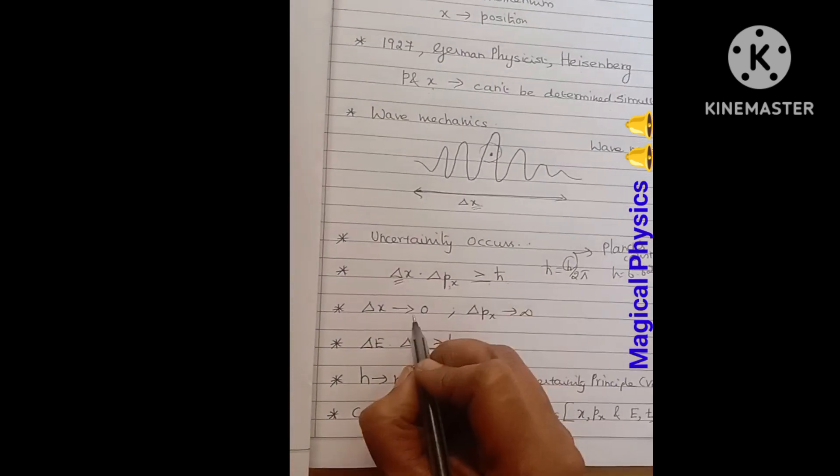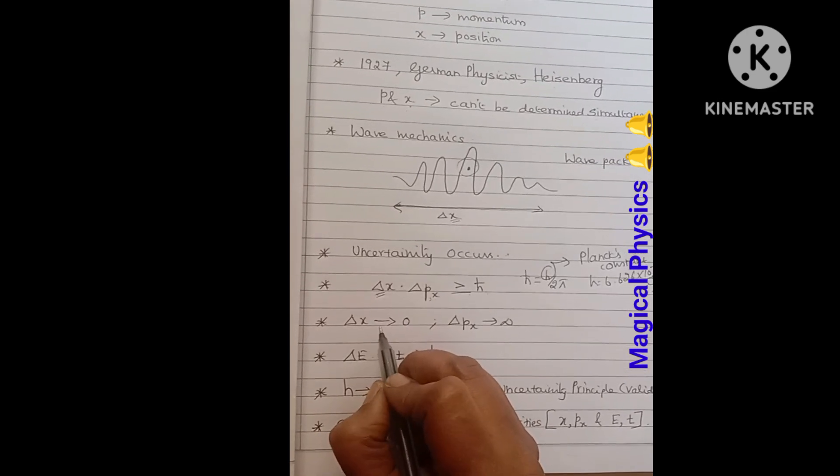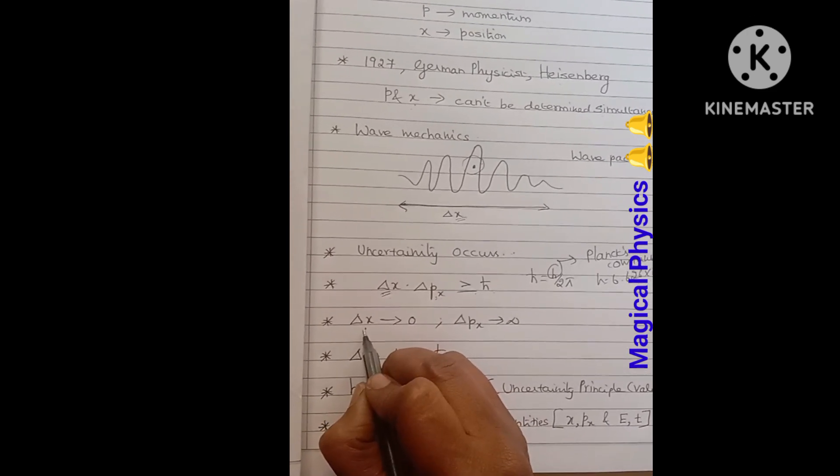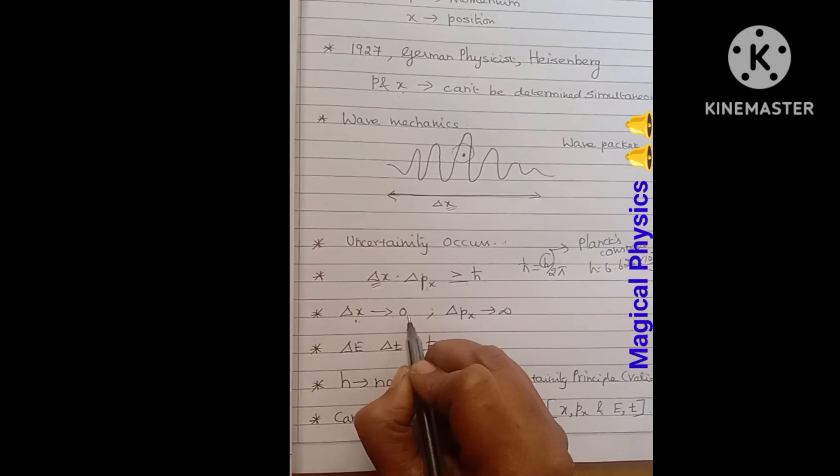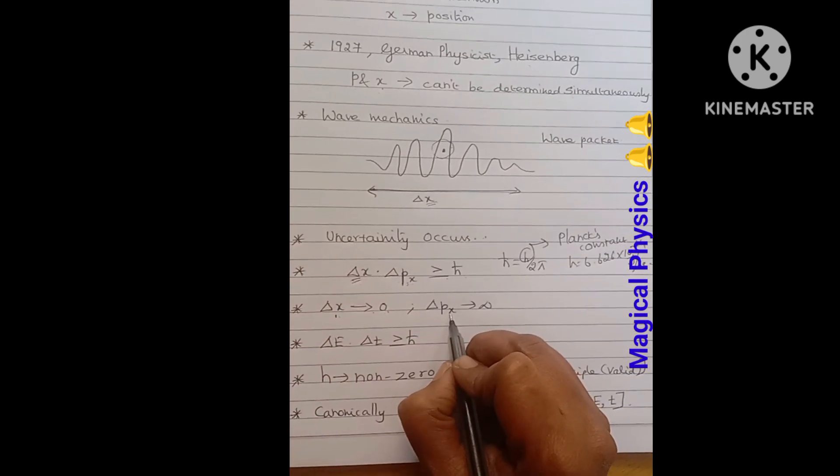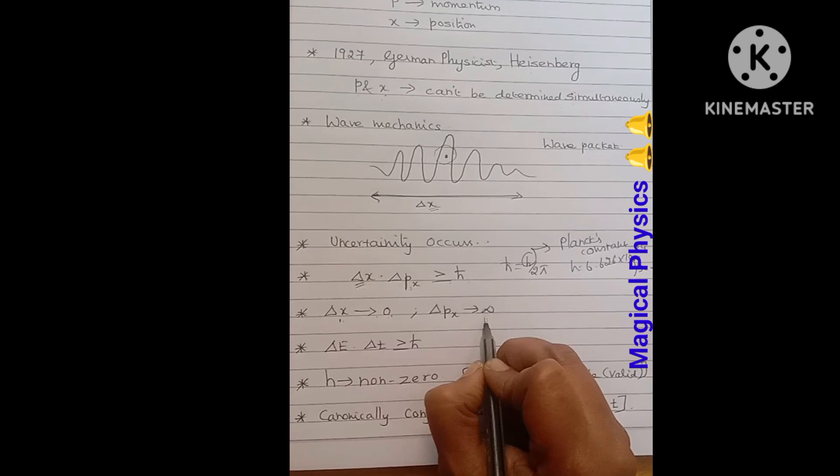If we are able to predict this uncertainty in location term, it can be written as Δx tends to 0. At that time, the uncertainty in momentum will tend to infinity.